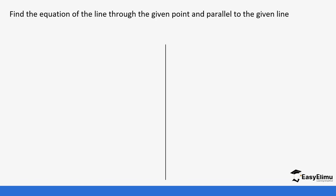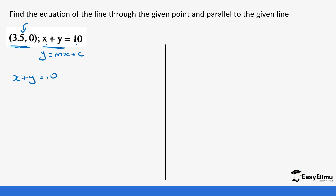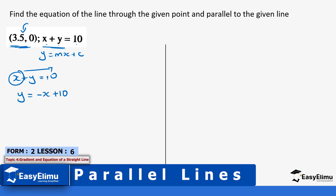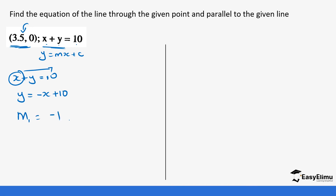Let's do one last question: find the equation of the line through a given point and parallel to a given line. We need the equation passing through the point (3.5, 0) and parallel to x + y = 10. First, we write the given line in the form y = mx + c. Taking x to the other side: y = -x + 10. This tells us the gradient is -1, and since the required line is parallel, it also has gradient -1.